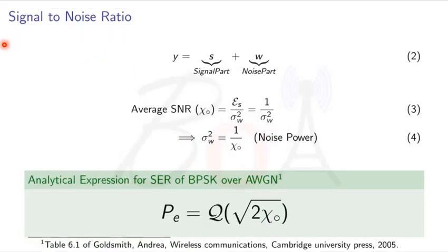Let's now compute the signal to noise ratio. We know that the received signal is given as Y equals S plus W, where S is the signal part and W is the noise part. The average SNR, which is represented as chi naught, is computed as average symbol energy divided by noise power. We have already considered the average symbol energy is equal to 1 and noise power is sigma W square. So average SNR is given by 1 divided by noise power, which is 1 divided by sigma W square.